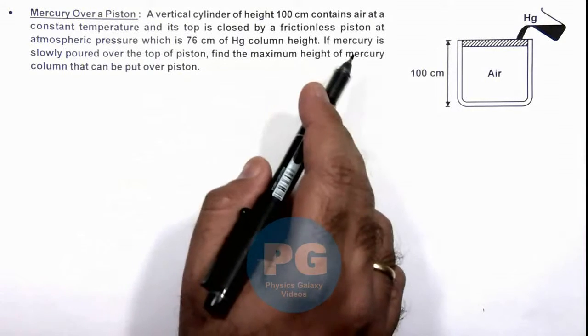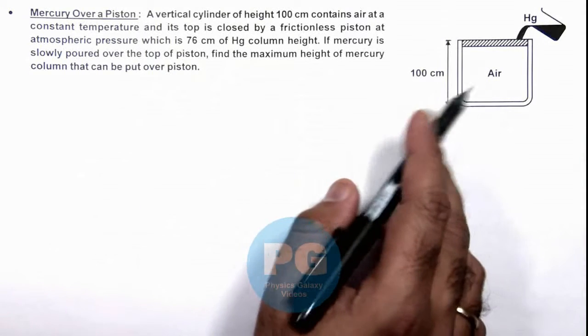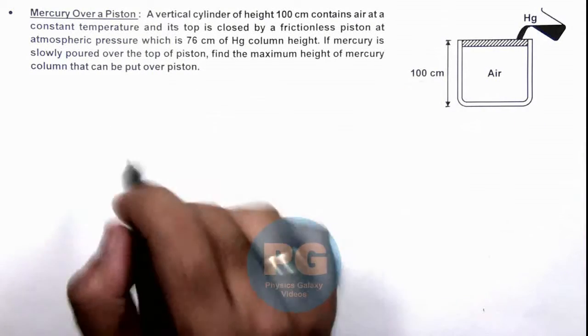If mercury is slowly poured over the top of this piston, we are required to find the maximum height of mercury column that can be put over the piston.